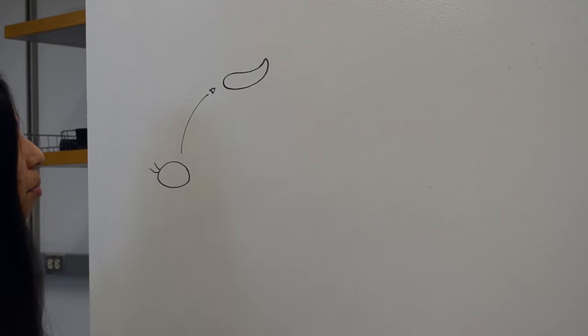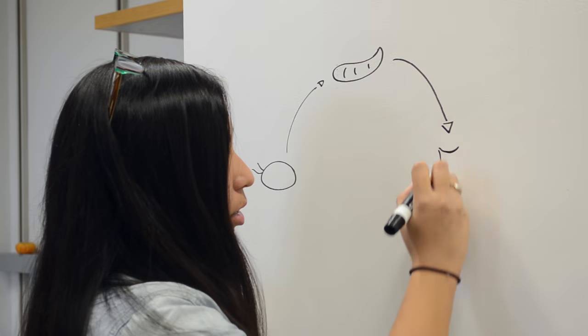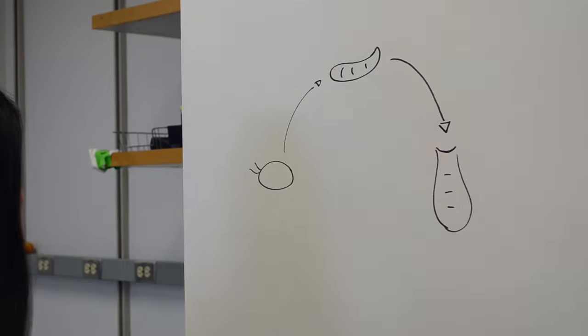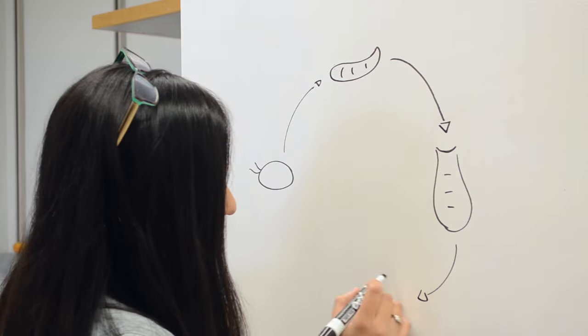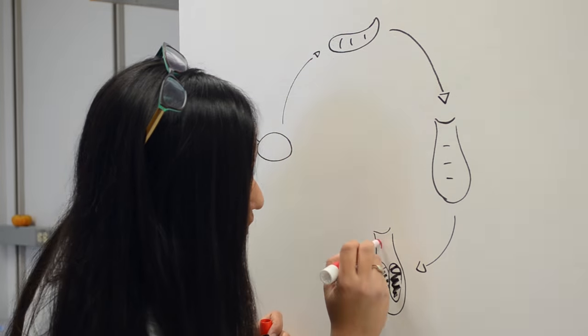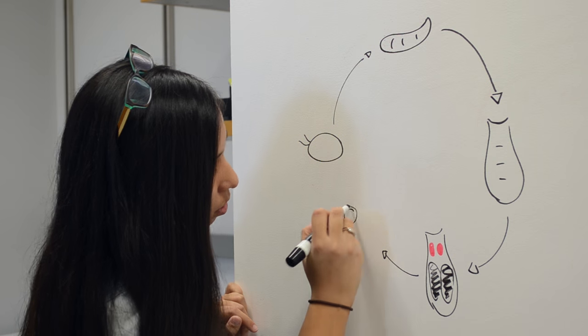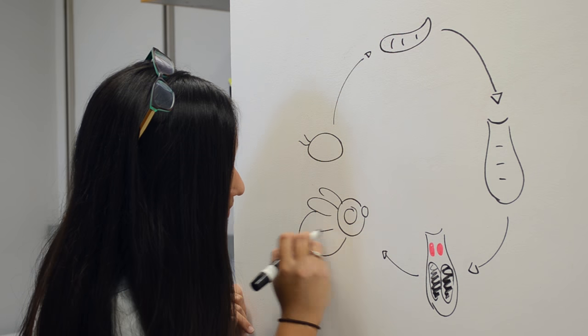Developmental biology goes beyond just individual cells and looks at how cells as a community work together to build a working, functioning animal or organism.